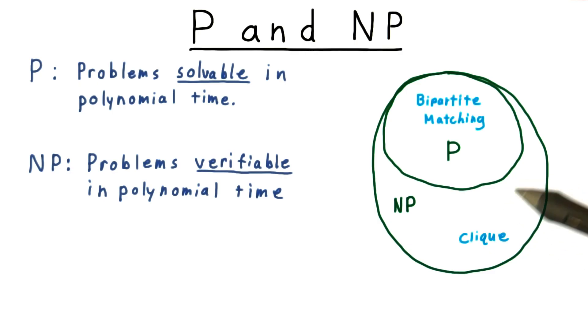That is to say, there are some problems that are efficiently verifiable, but not efficiently solvable. But we don't have a proof for this yet. The clique problem that we considered is one of the problems that belongs in NP, but we think does not belong in P.